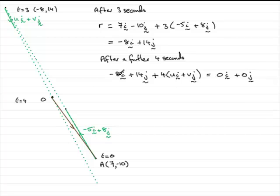Now if I group together the i components here, what I've got is 4u minus 8 in the i direction. And as for the j components, I've got 14 plus 4v in the j direction. And we can see that equals 0i plus 0j.